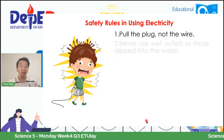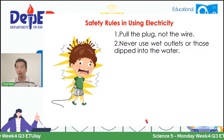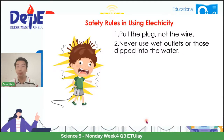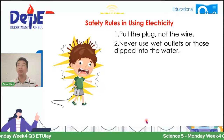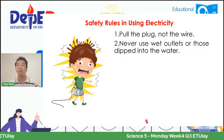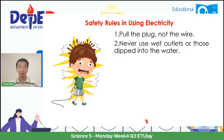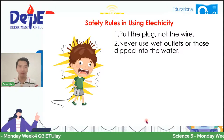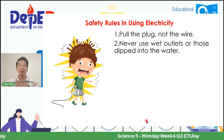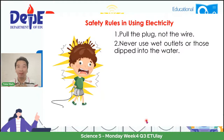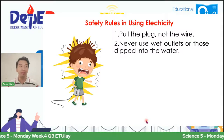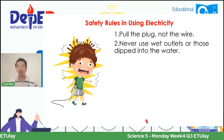Number two: never use wet outlets or those deep into the water. Kapag ang inyong bahay ay binaha o natamaan ng tubig mismo yung outlet, wag muna natin gagamitin. Importante na ito ay tuyo dahil baka magkaroon ng tinatawag na electric shock. Importante na ma-i-check ito ng isang expert — isang electrician — kasi mahirap kalaban ang kuryente, baka magkaroon ng accident.